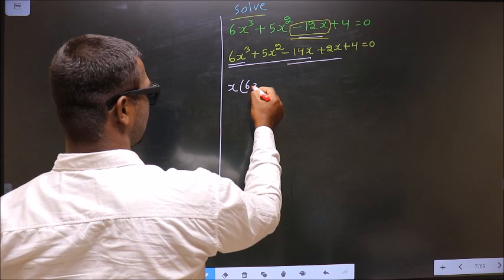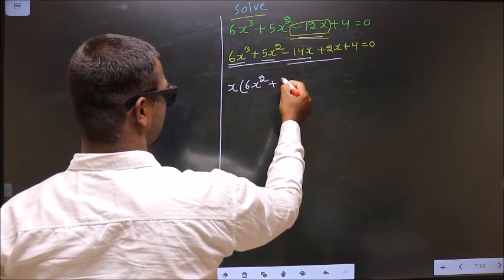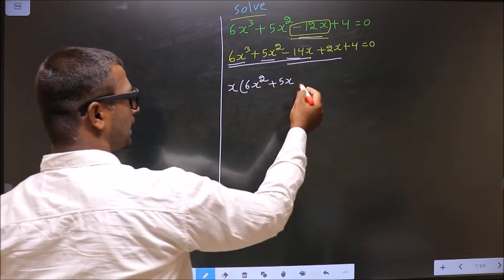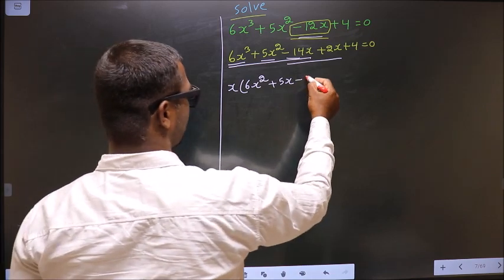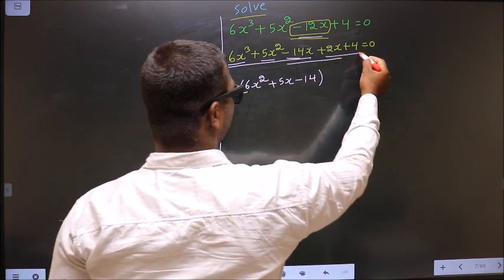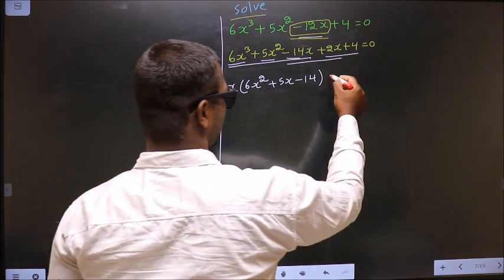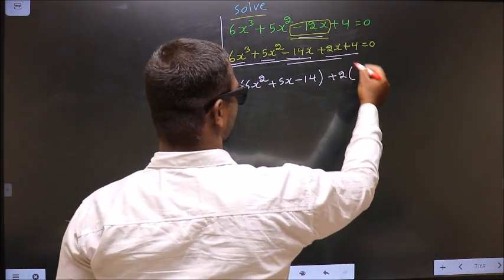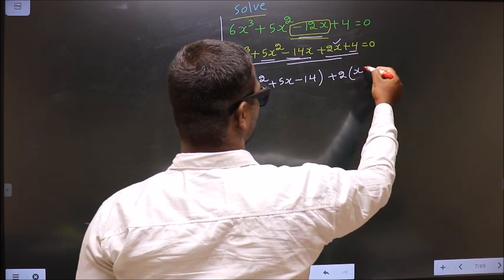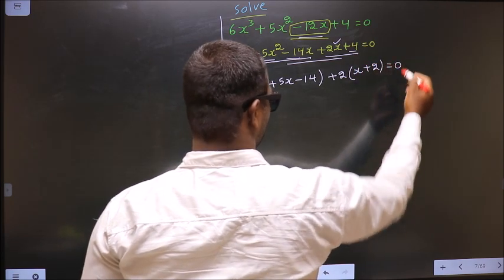So here you get 6x², and here you get plus 5x, and here you get minus 14. What can you take out common from these 2 terms? It is plus 2. So here you get x, and here you get plus 2, equal to 0.